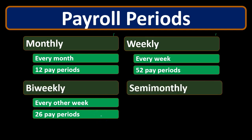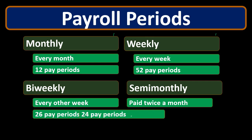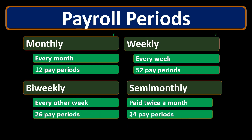Whereas if you pay semi-monthly — think of something like the 15th and the 30th or 31st — you pay in the middle of the month and the end of the month. That's slightly different than paying biweekly. Semi-monthly means you're being paid exactly twice a month, no matter what, which is going to be 24 pay periods.